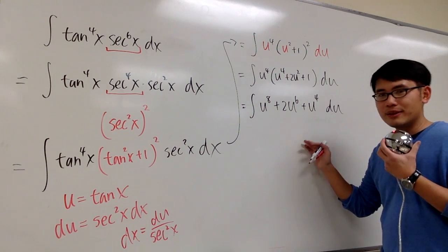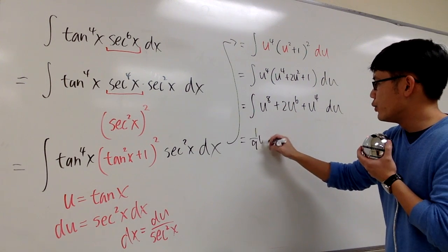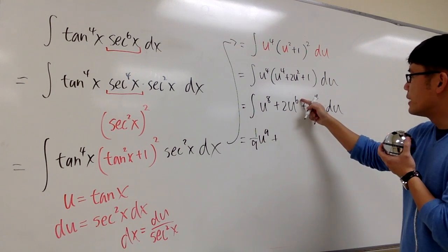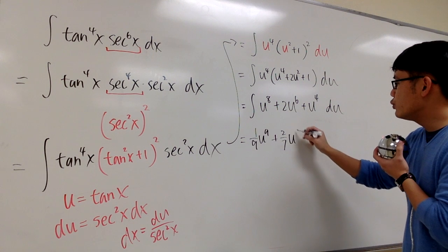And we are finally ready to integrate this. The integral of this is going to be 1 over 9, u to the 9th power, and then this is going to be plus 1, which is 7, divided by 7, we have 2 over 7, u to the 7th power.